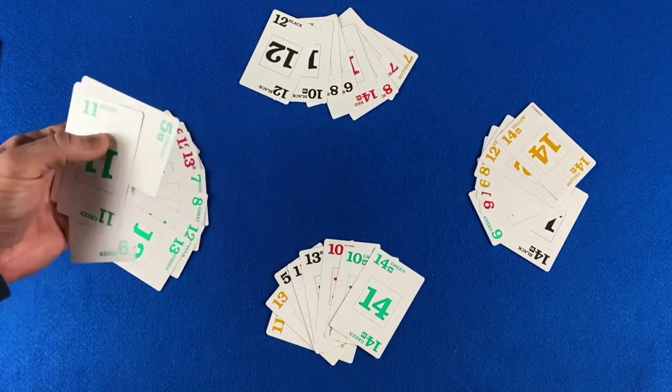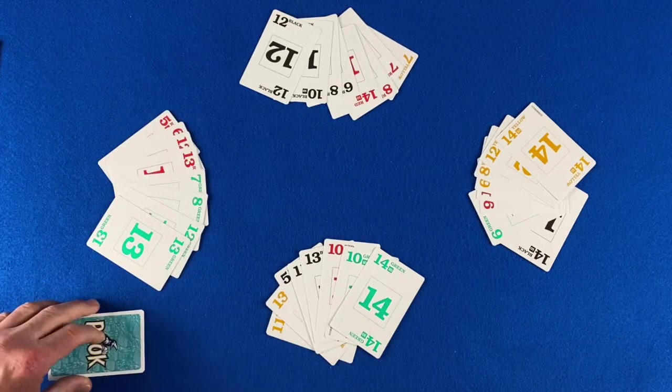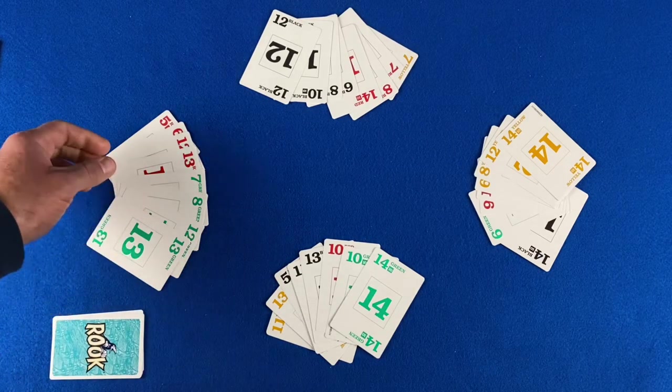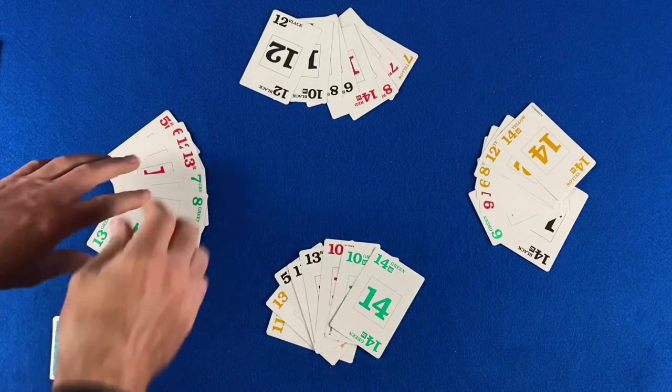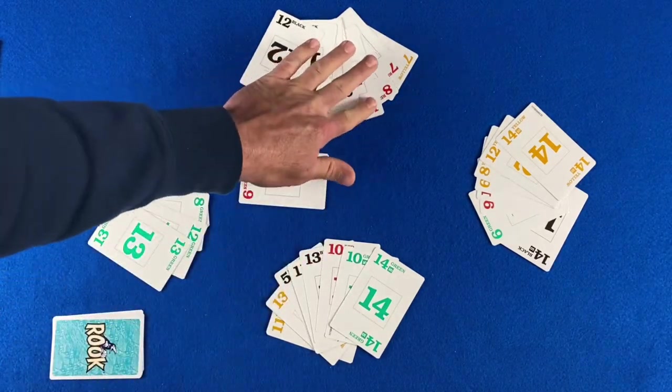The player that takes the trick collects it and places it face down. The player that captures the trick leads next. Play like this continues until all of the tricks have been played.